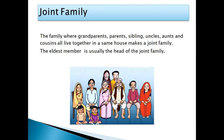First is joint family. As you can see in this picture, grandparents, parents, uncle, aunt, brother, sister, and cousins all live together in the same house. That makes a joint family where all the members live together. The eldest member, usually the grandfather, is the head of the joint family.